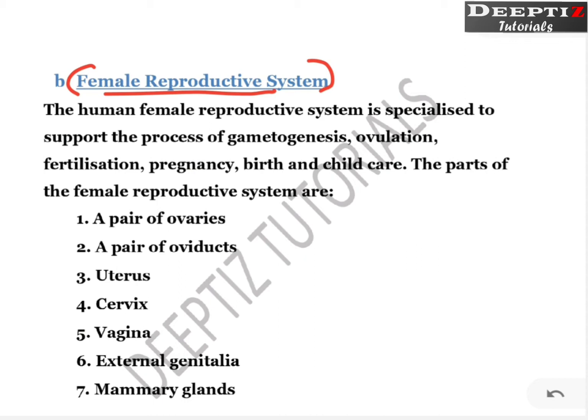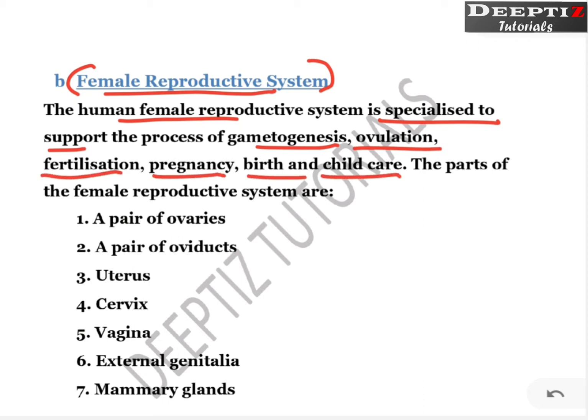Once we understand the structure, we will go deep into the functions they perform. The human female reproductive system is specialized to support the process of gametogenesis, ovulation, fertilization, pregnancy, birth and child care. The organs which support all these processes together form the female reproductive system.